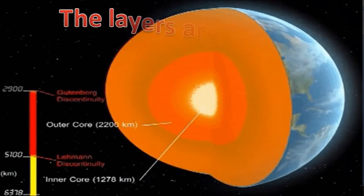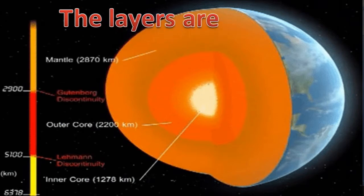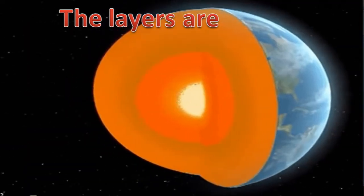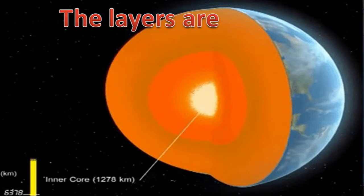The layers of the earth are, from outside: the first layer is crust, second layer is mantle, third layer is outer core, and the central innermost layer of the earth's surface is inner core.